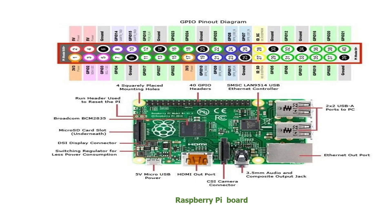This is the board details of Raspberry Pi. We can see that it consists of an Ethernet output port, 2×2 USB-A ports, a camera connector, HDMI output, 5-volt micro USB power, a switching regulator, an SD card slot, and mounting holes — four squarely placed mounting holes. It also has 40 GPIO headers.